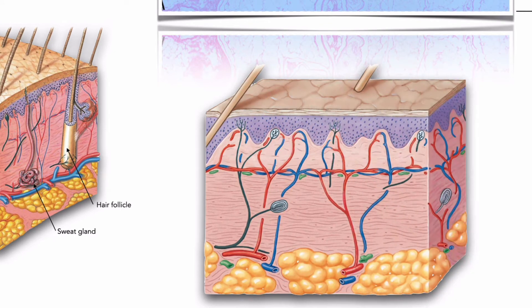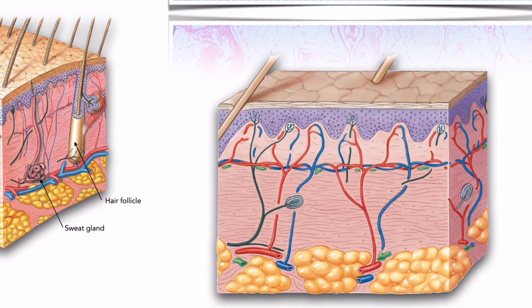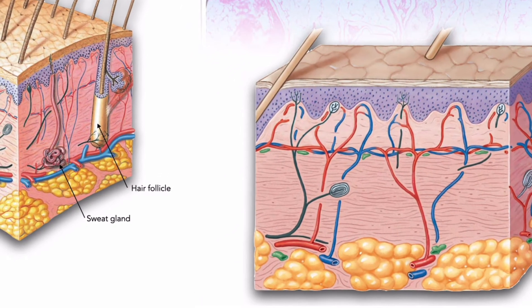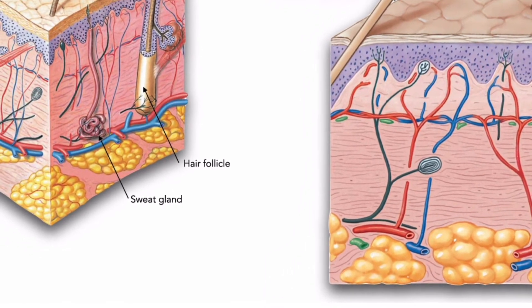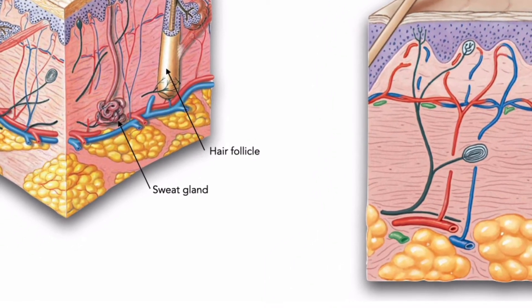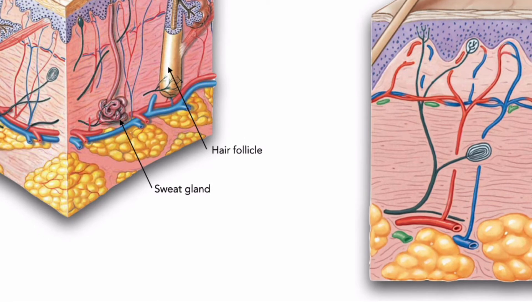Both dermal layers contain a network of blood vessels of the cardiovascular system, lymphatic vessels of the lymphatic system, and nerve fibers of the nervous system. Arteries supplying the skin lie deep in the hypodermis. Branches of these arteries form two networks or plexuses in the dermis. The deeper network lies along the border of the hypodermis with the reticular layer of the dermis, and is called the cutaneous plexus.